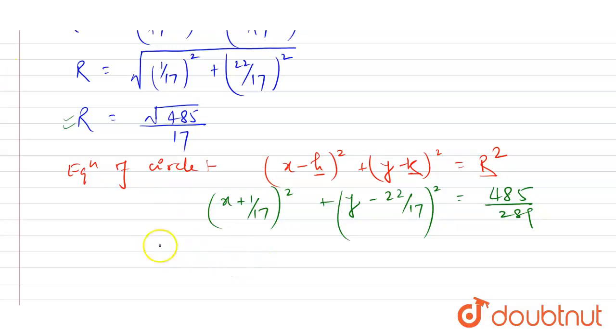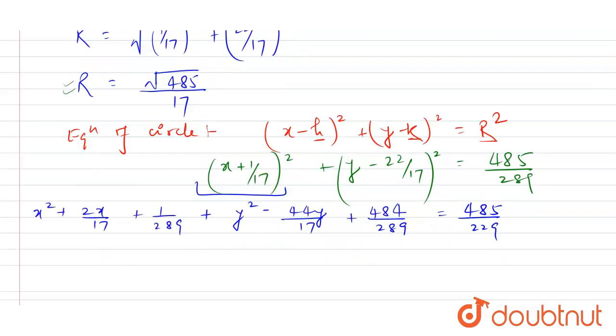Now just simplify them. If you open the squares you will get x² + 2x/17 + 1/289 + y² - 44y/17 + 484/289 = 485/289.